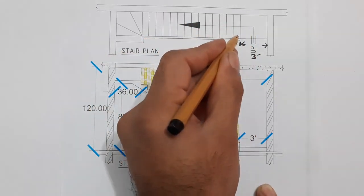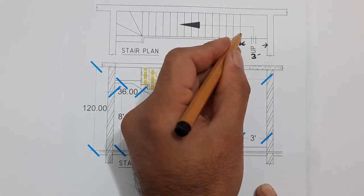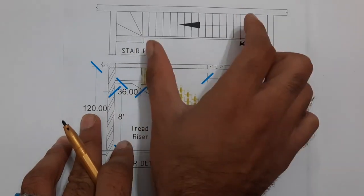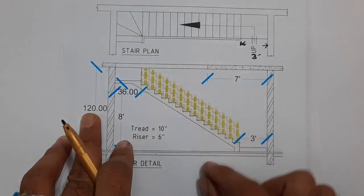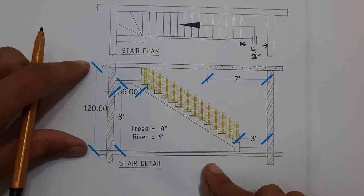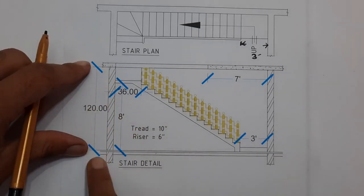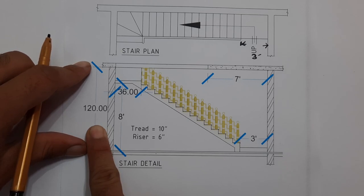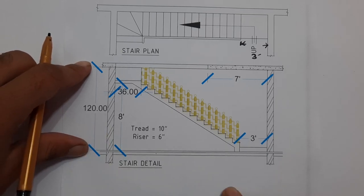So this stair is going to the height of 12 feet, which is about 120 inches. You can see in the section, 120 inches this stair is going. So here the first landing is to the height of 8 feet.